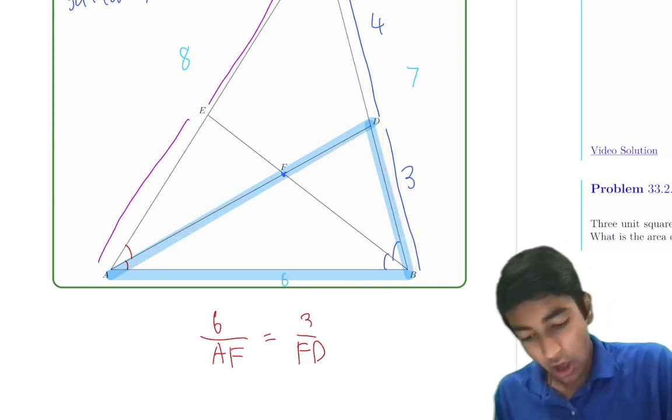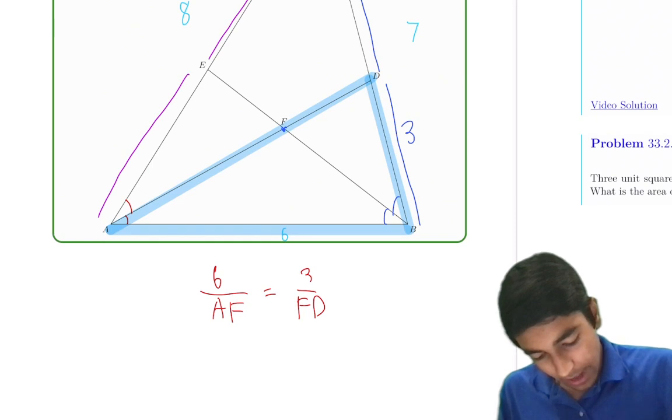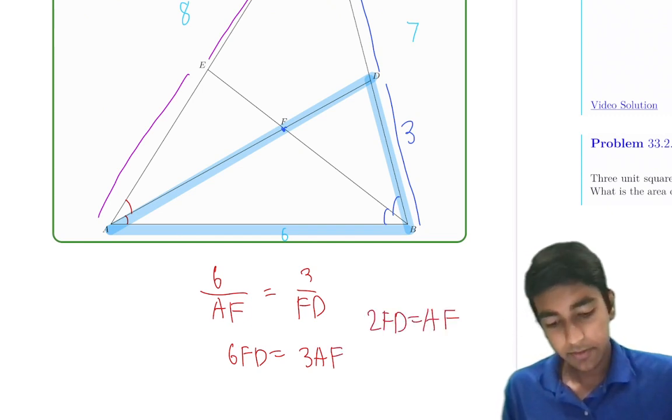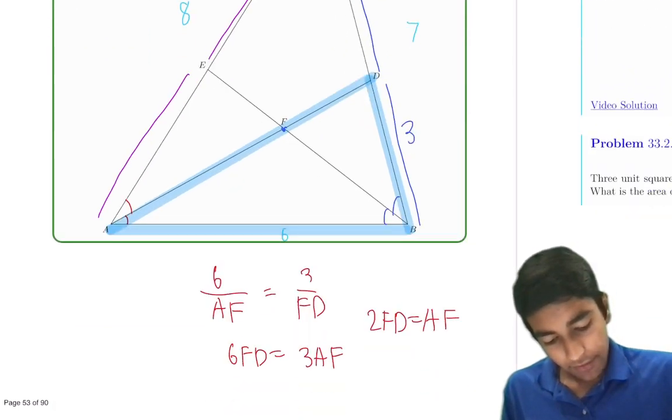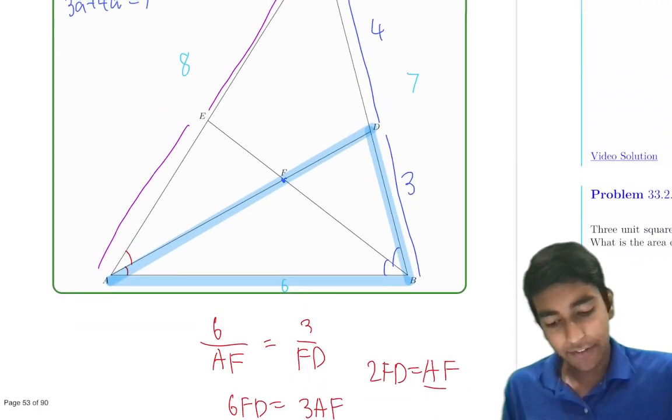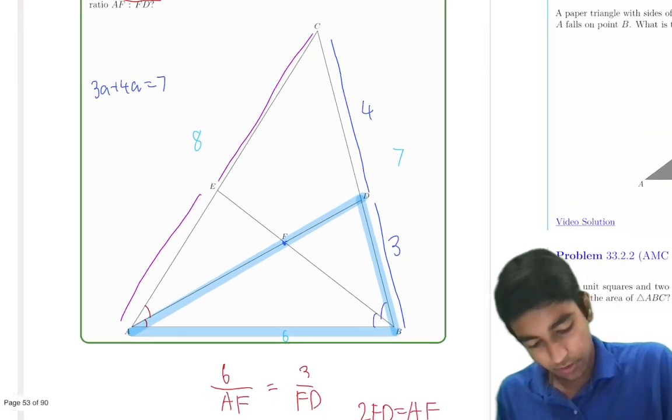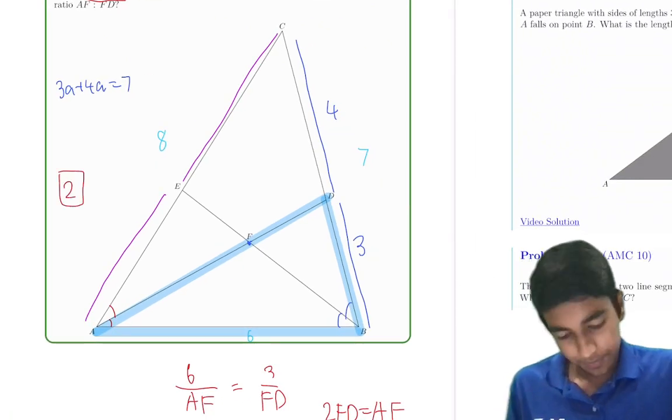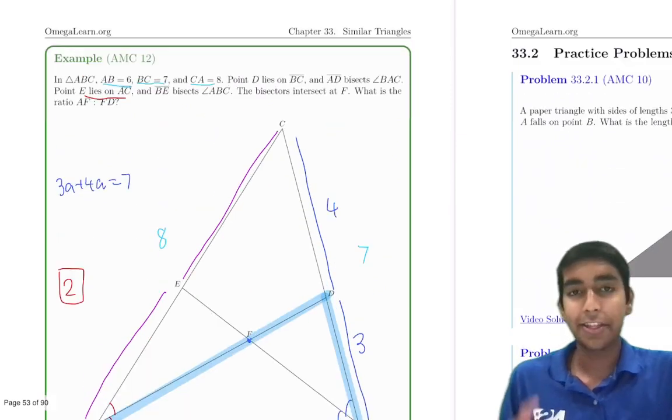If we expand this out, we get that 6FD is 3AF, so that means you have 2FD equals AF. So AF will be 2 times FD, so the ratio is 2, or as the choice says, 2 to 1. So the ratio is 2, the answer is 2.